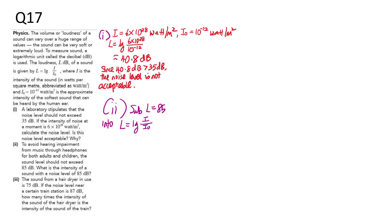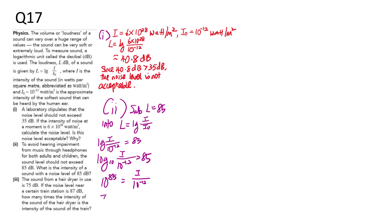For part two, especially if you like to listen to very loud music, watch out. If the loudness is 85 dB, substitute L equals 85 into the formula, convert the log base 10 expression to index notation, and cross multiply to find the intensity. The intensity is 1 times 10 to the power of negative 3.5 watts per meter squared.